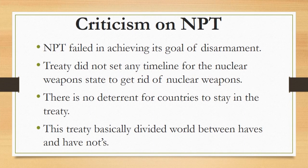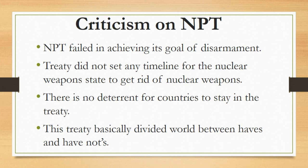Criticism of NPT: years have passed, but NPT has failed in achieving its goal of disarmament. Thousands of nuclear weapons are still present in the contemporary world, so this treaty has failed in achieving the targets mentioned in its preamble. Secondly, although P5 countries which already had nuclear weapons at the time of signing agreed to work toward complete elimination, the treaty did not set any timeline for nuclear weapon states to get rid of their weapons.